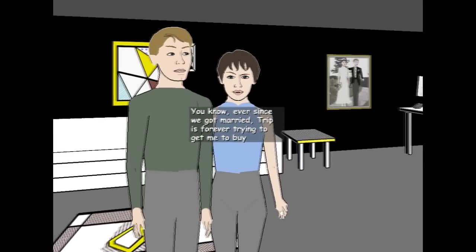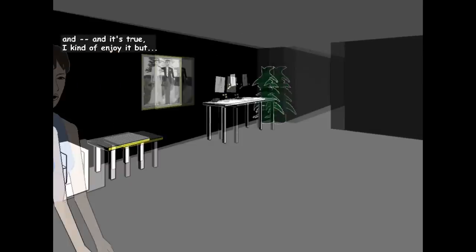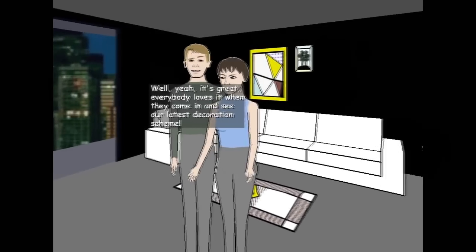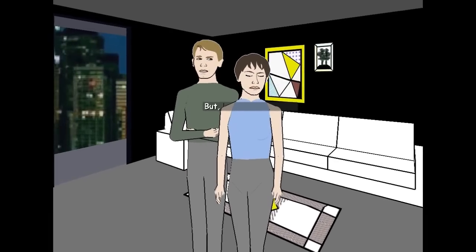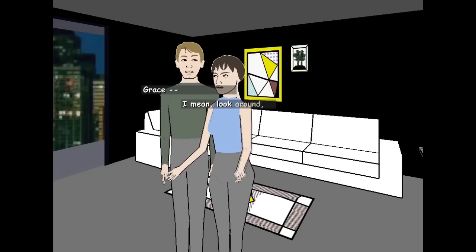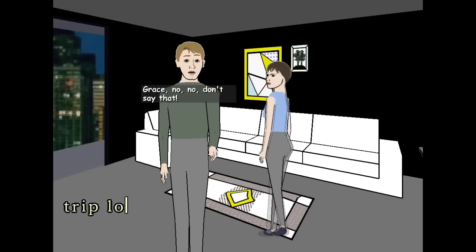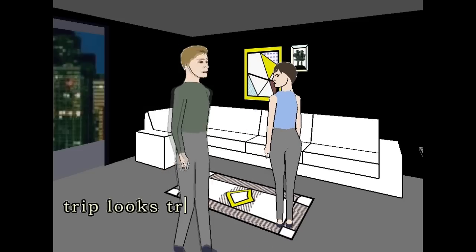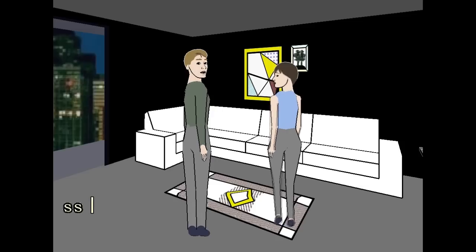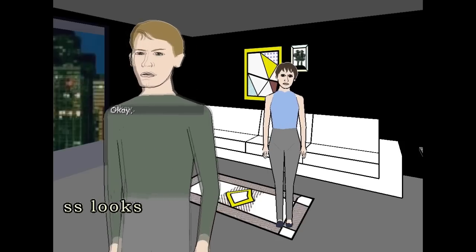You know, ever since we got married, Trip is forever trying to get me to buy new furniture and redecorate. I'm kind of enjoying it? It's Grace. You're probably going to have to talk about this really nice decoration machine. Kelly, you have to look at this room and admit it looks terrible. I mean, look around. This room is hideous. Grace, no. Don't say that.